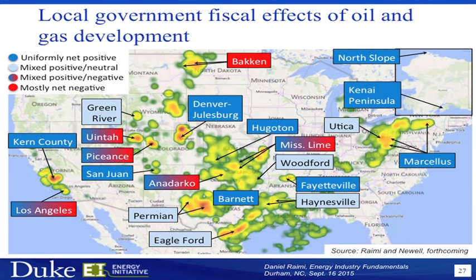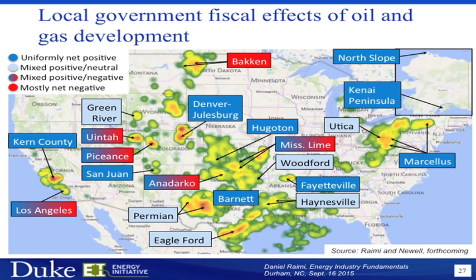The last slide shows a project looking at how oil and gas development affects local governments. This figure shows an extremely simplified version of the fiscal effects on local governments from oil and gas development. Blue generally means that local governments in that part of the country have experienced fiscal benefits — lots of new revenues and not too many new costs. Red areas show places where costs have outstripped revenues for local governments. The project is called Shale Public Finance, and there's more information on our website. We have about five more minutes for questions.